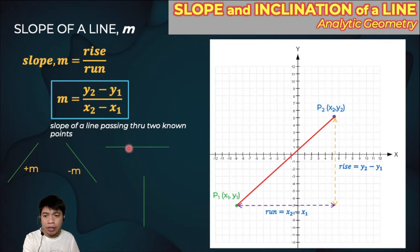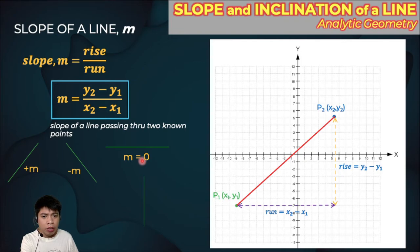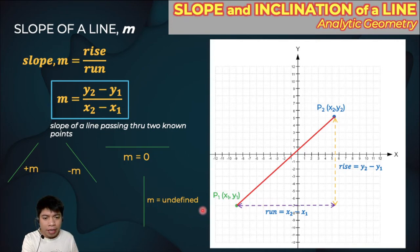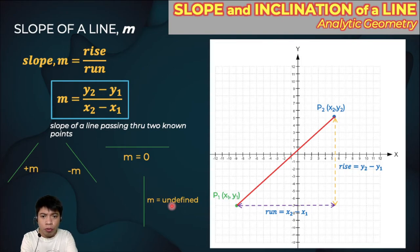If the line is horizontal, then the slope is always zero. Why? Because a horizontal line has no rise — that is zero — and zero divided by any number is always zero. If the line is a vertical line, the slope is always undefined because the run is zero, and the run is in the denominator. Any number divided by zero is undefined. So remember this so that when you compute, you already have an idea of what sign the slope will be.